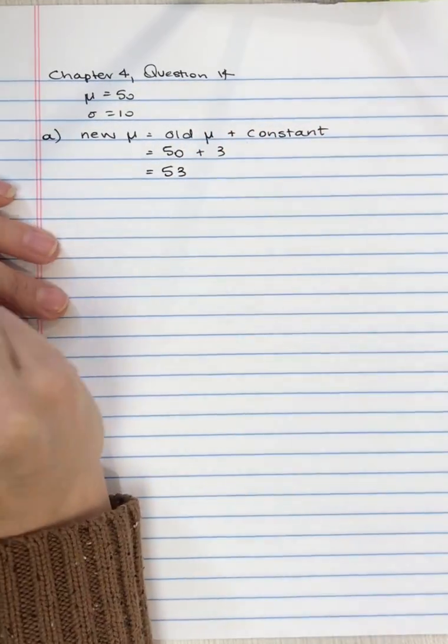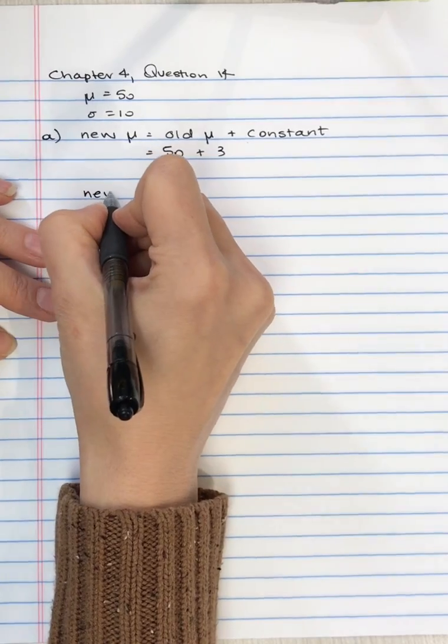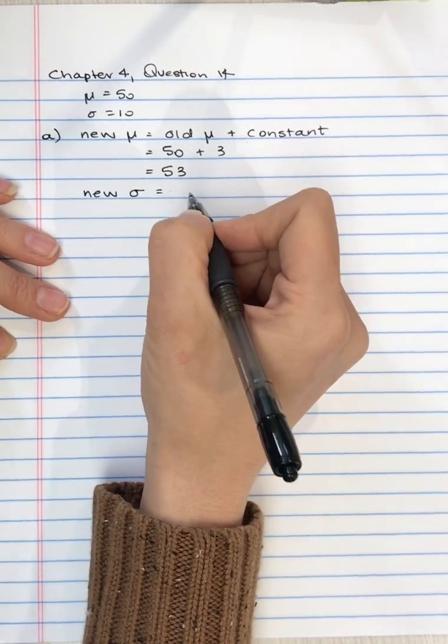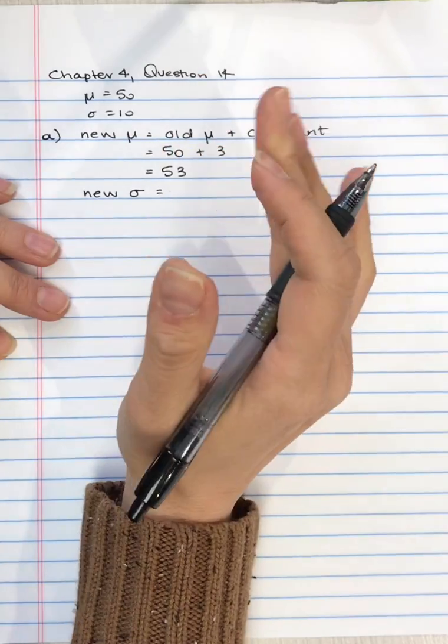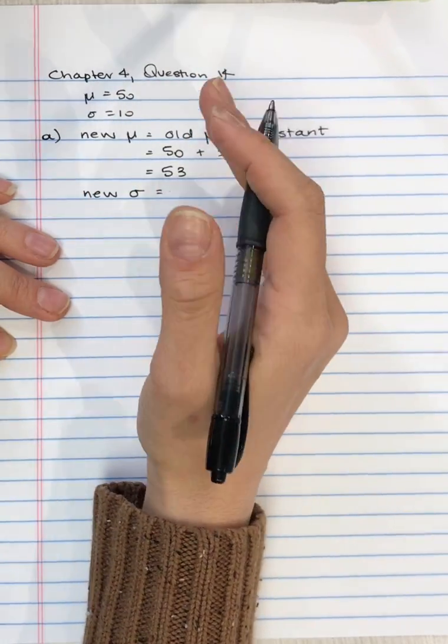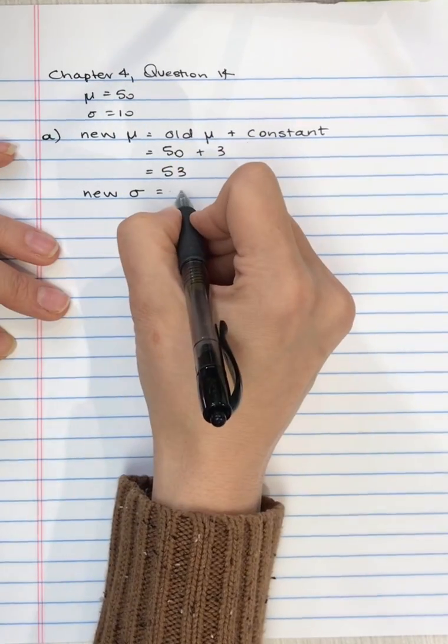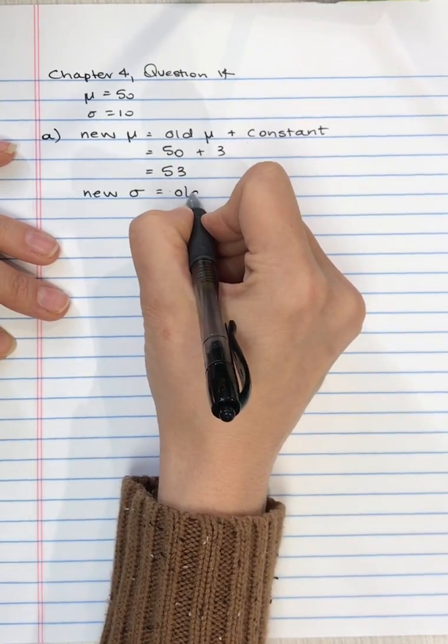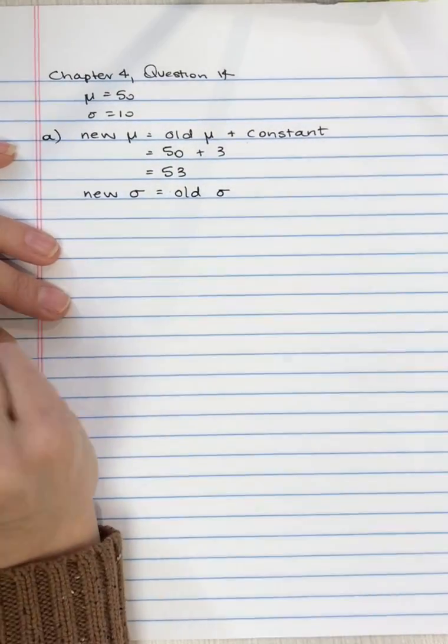So the new mean is 53. The new standard deviation is the same. If you add a constant to every value in the distribution, the new standard deviation is the same as the old standard deviation.